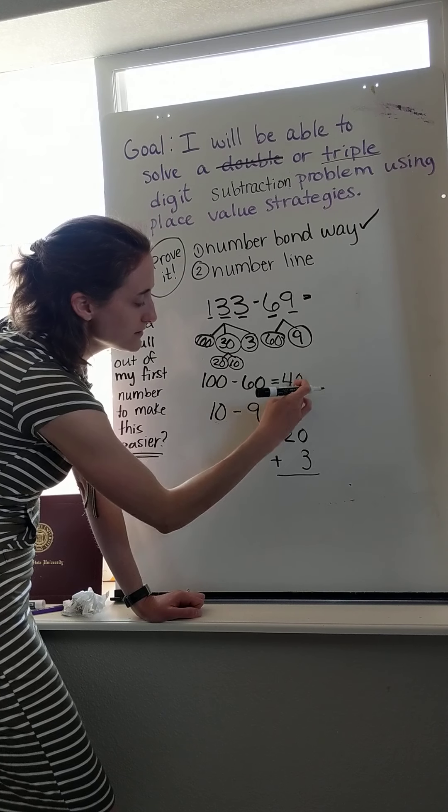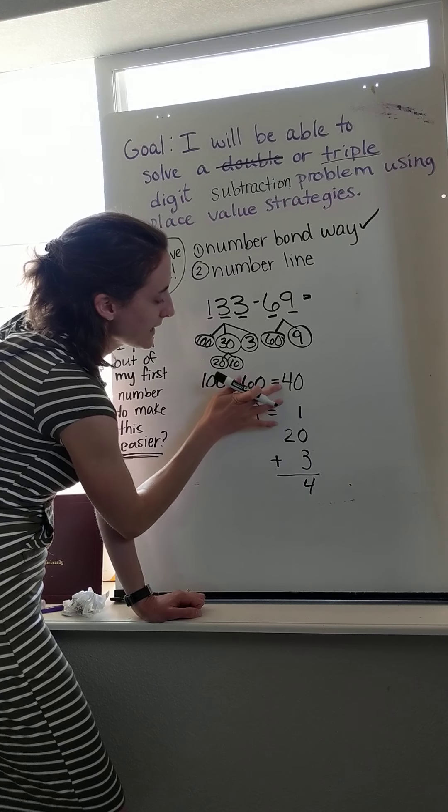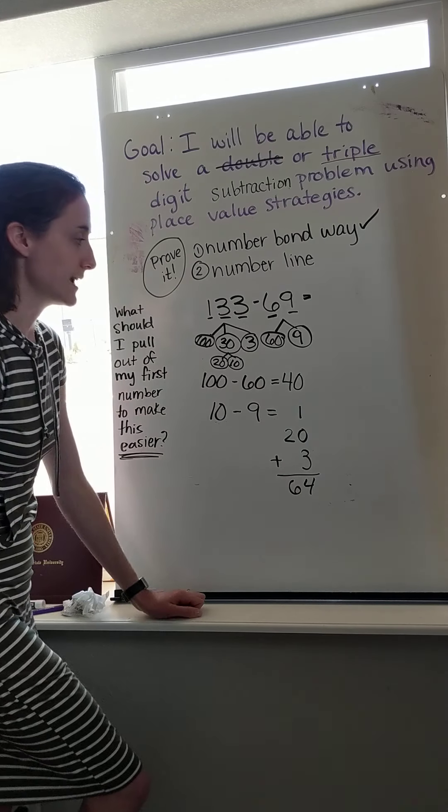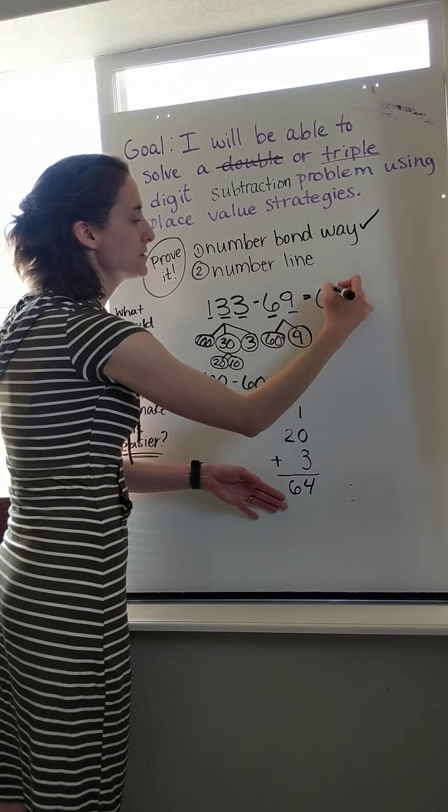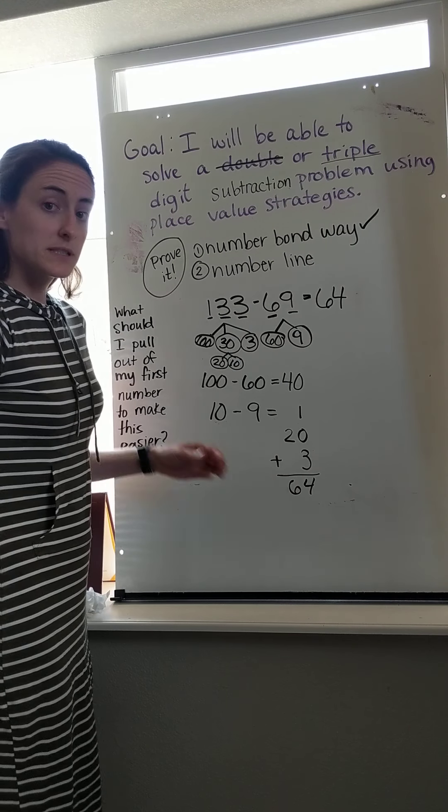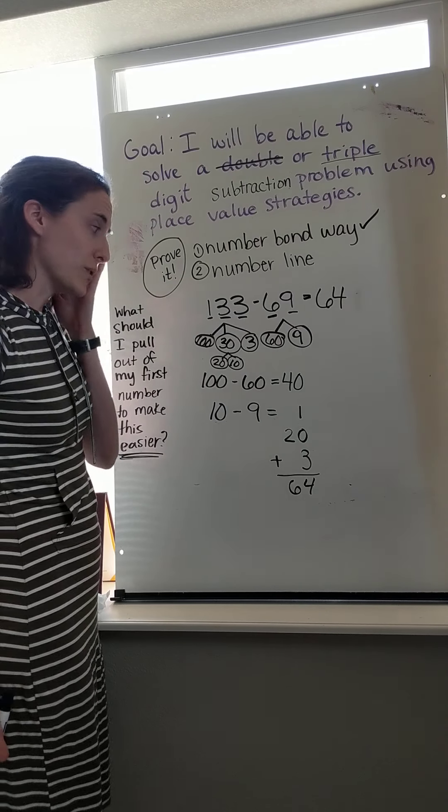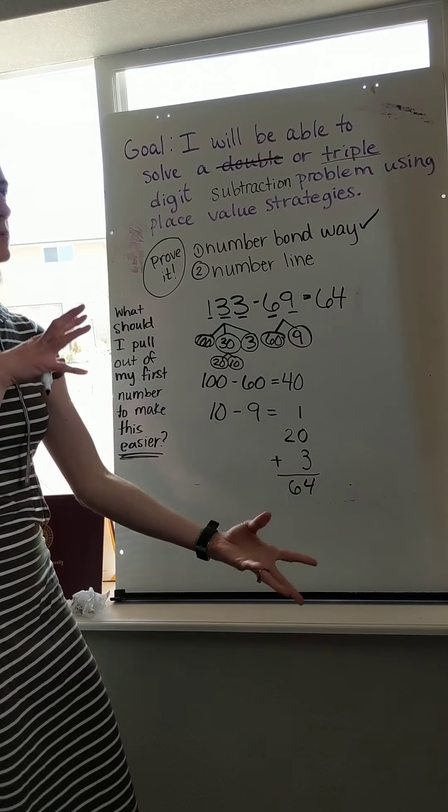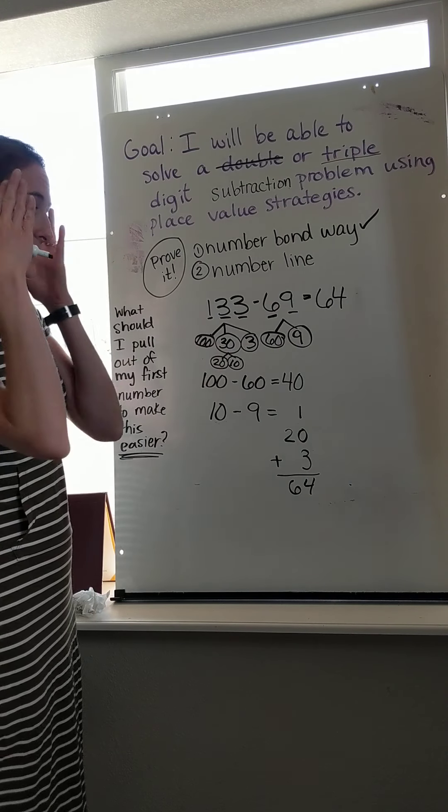So these are all the pieces that I have left. Now I'm going to add up my ones. That's 3 plus 1 makes 4 ones. Add up my tens. 4 tens plus 2 tens makes 6 tens. So my answer to 133 minus 69 should be 64. Now, that's a lot of steps. But the main thing is whatever you can do to make it easier for your brain is what number bond way is supposed to help you with. Pull those numbers apart until you're ready to find your answer in the easiest way possible.